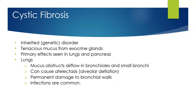Changing gears now to cystic fibrosis. Cystic fibrosis is actually a genetic, inherited disorder that people are born with. It causes tenacious mucus from exocrine glands. The primary effects are seen in both the lungs and the pancreas. The effect on the lung is thick mucus that obstructs airflow in the bronchioles and the small bronchi. It can cause atelectasis — picture a paper bag that collapses and crushes down when you breathe in, losing all pressure inside.